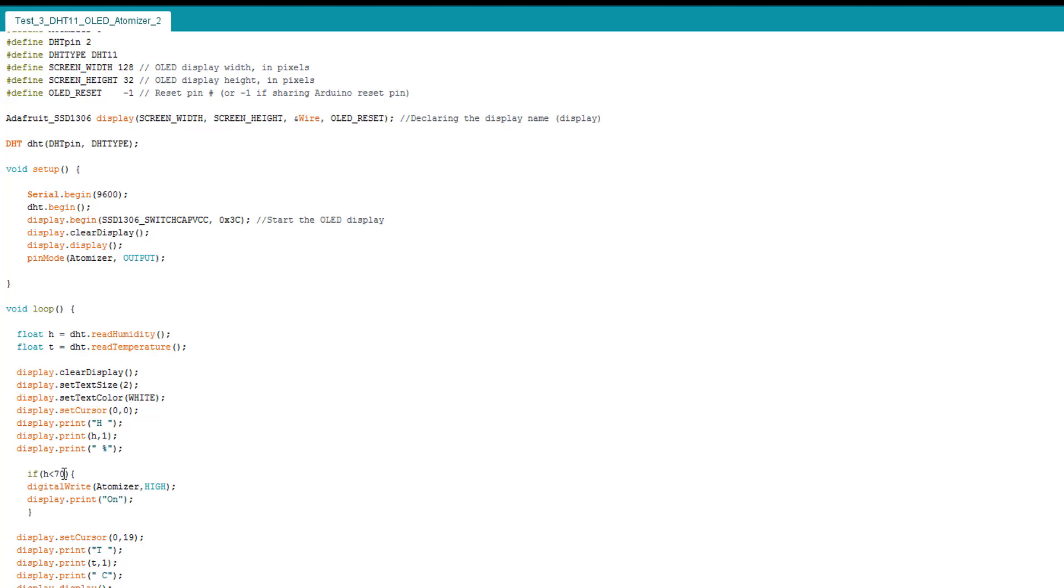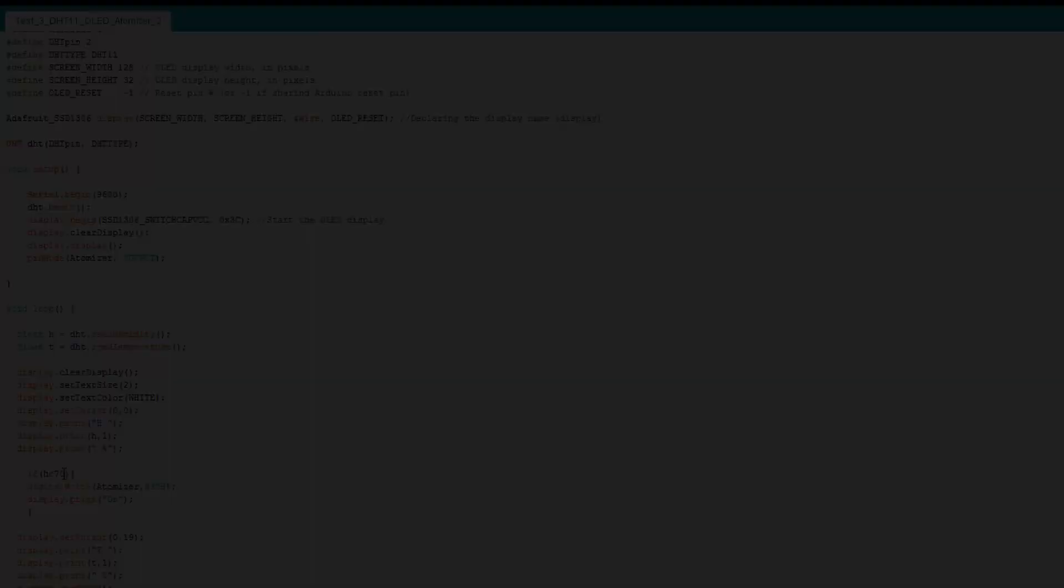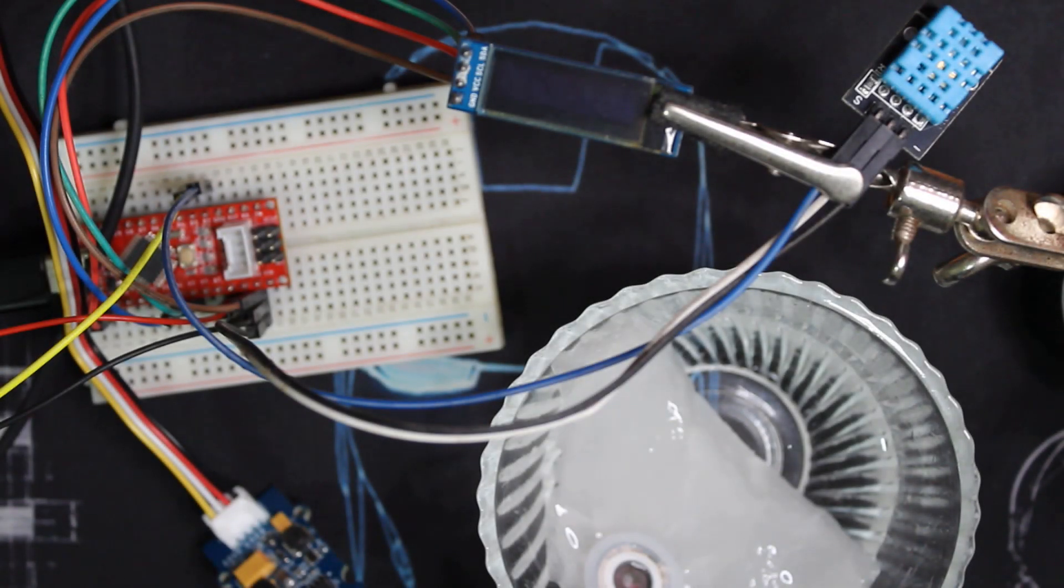You can calibrate your module. I didn't calibrate mine. I know that 70 is very high. Also, it's detecting approximately 60, which is pretty high too. Here I will power my Seeeduino.